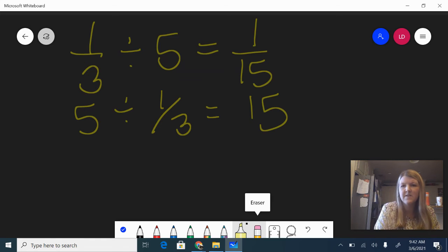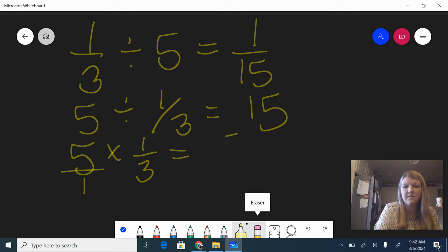Notice the difference between the two. We'll throw in another multiplication one because I want you to notice the difference. If I had five times one-third, with this type of problem, we can turn the whole number into a fraction by putting a one underneath it. Then we follow our rules for multiplying. Five times one gives me five, one times three gives me three.